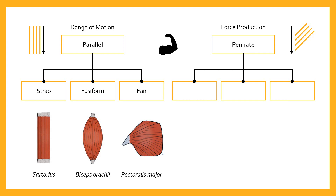Pennate muscles are muscles in which the fibers are not parallel but at an angle to the force generating axis — this angle is known as the pennation angle. In pennate muscles, the fibers tend to be shorter than in parallel muscles, which means a pennate muscle often has more fibers in cross-section. This reflects the specialized role of pennate architecture: it prioritizes force generation over range of motion.